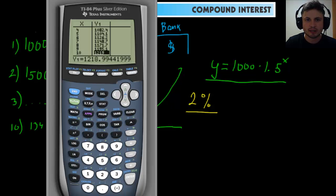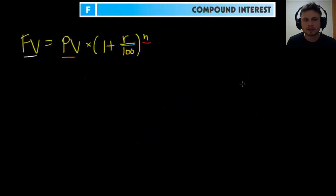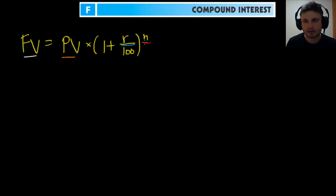In the textbook there's a formula that's also on your test formula booklet, so you need to understand how it works. There are two versions: one for annual interest and one for interest compounded multiple times per year. The annual formula has four components: FV = PV × (1 + R/100)^n.